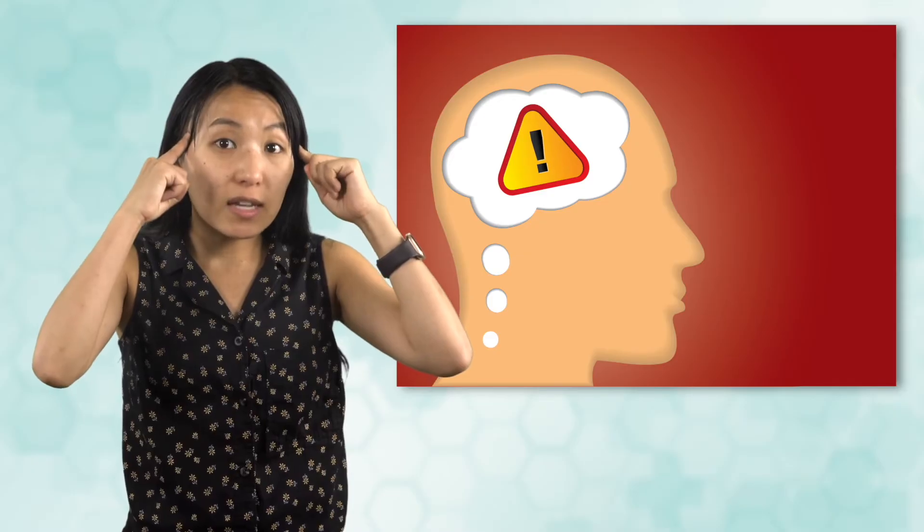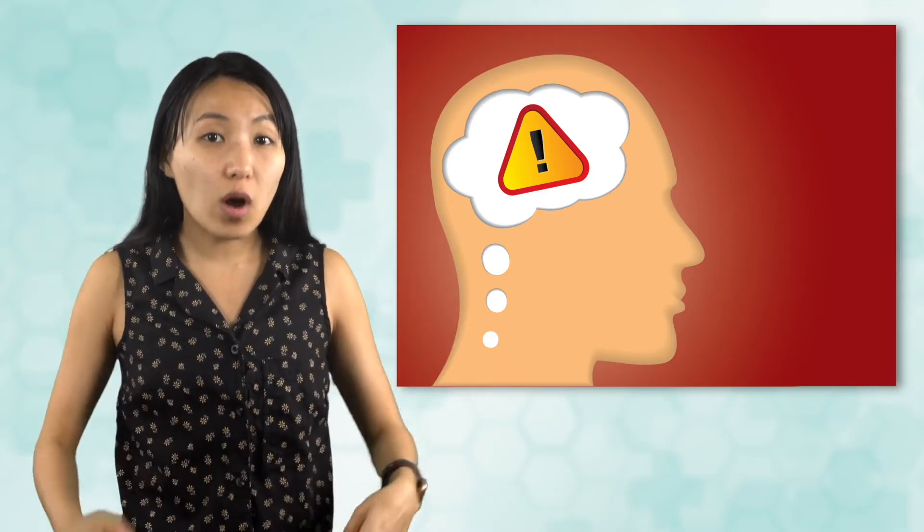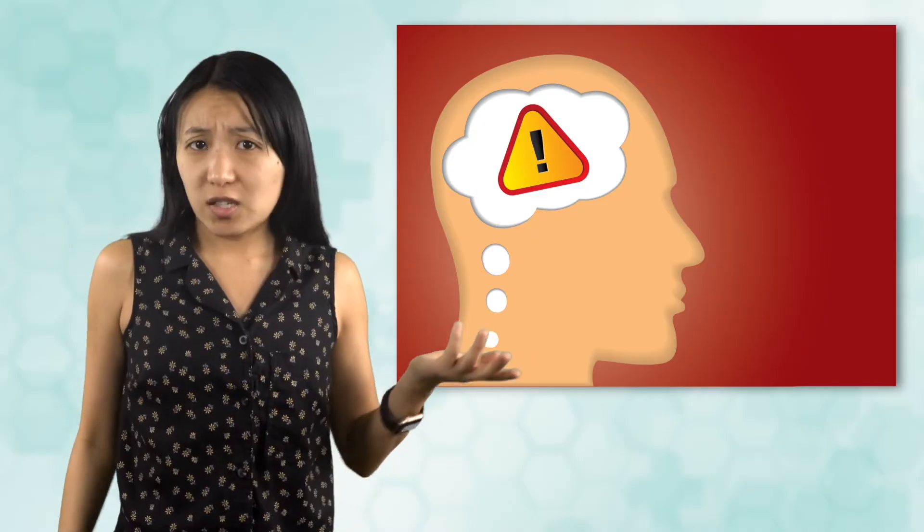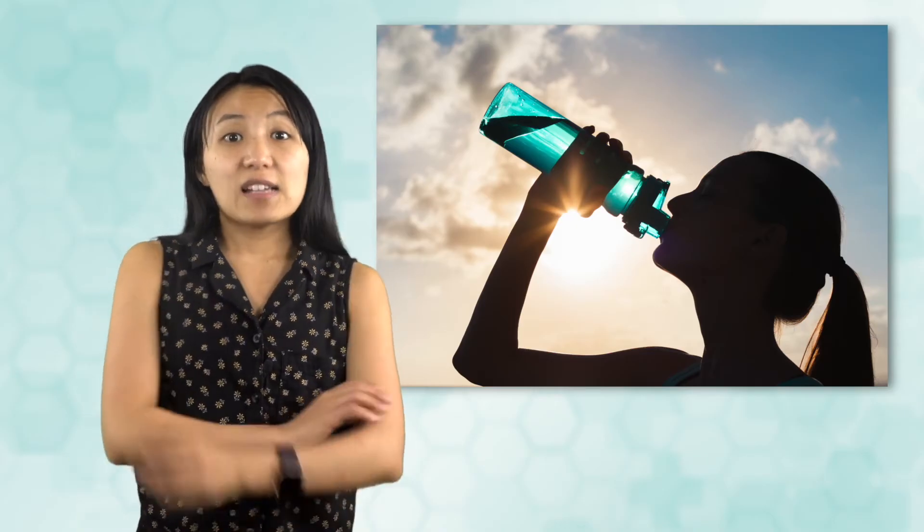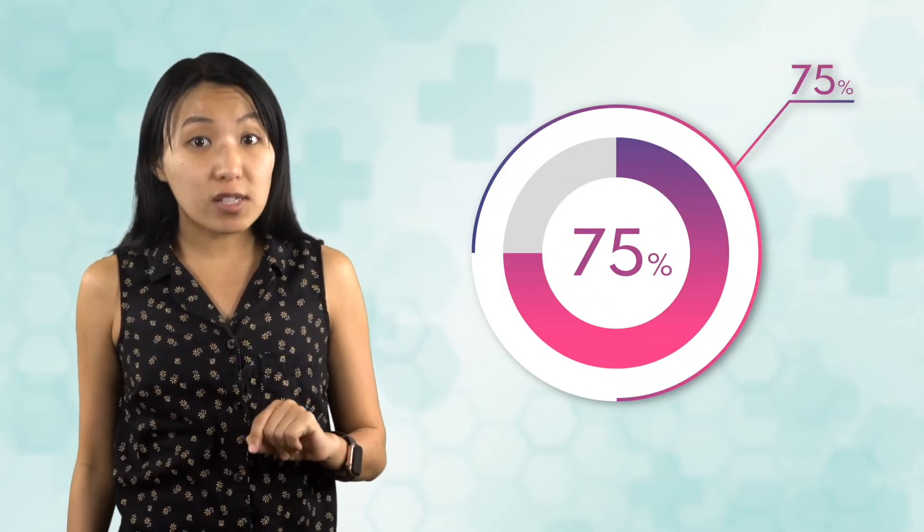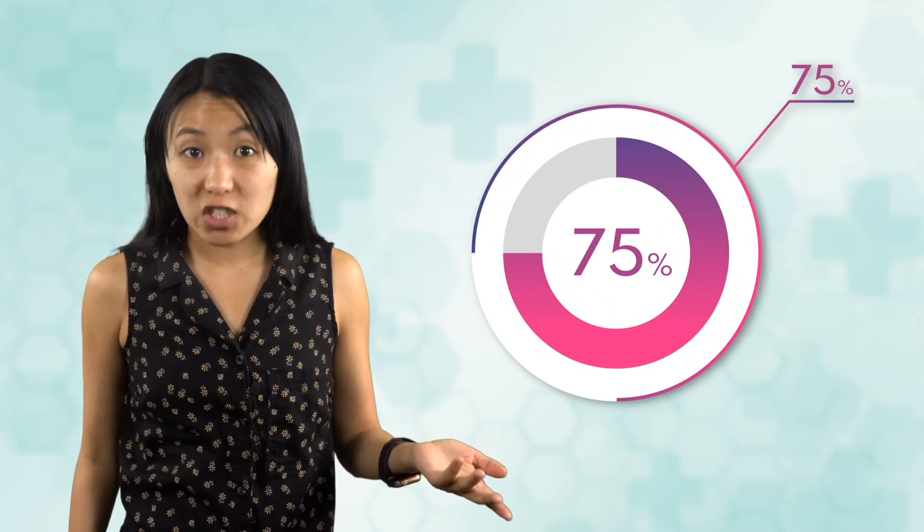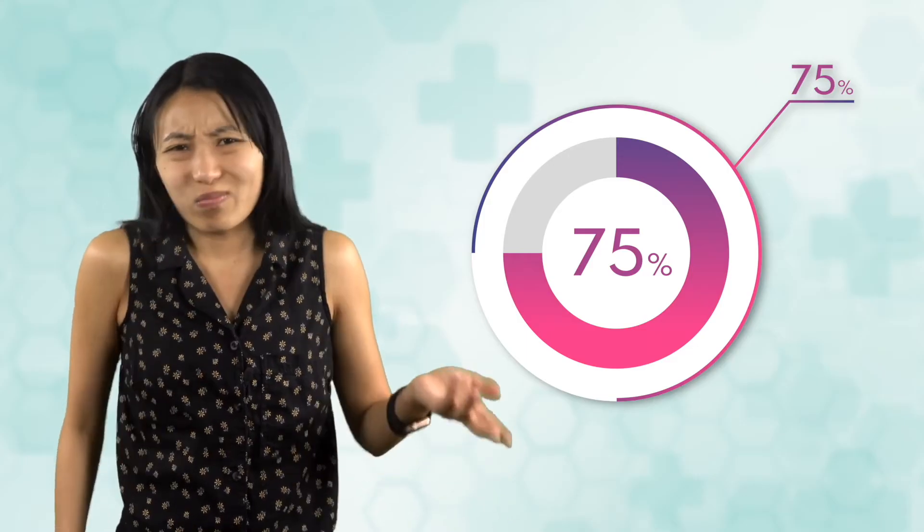Luckily, our body does have a built-in defense mechanism to prevent dehydration, something you probably feel a few times a day. That's right, I'm talking about thirst. This is our brain's way of telling us to replenish the water supply line when it's running low. It's pretty handy, which would make you think that staying hydrated is easy. Just drink water when you're thirsty. But as it turns out, that is not the case. Up to 75% of Americans report that they don't drink enough water each day. So what's going on?